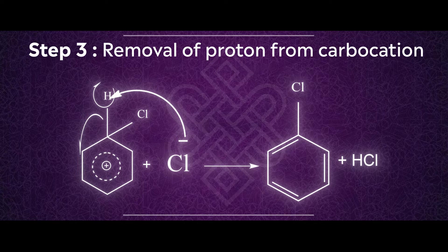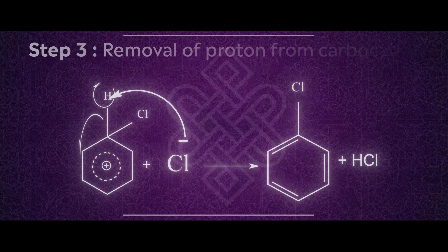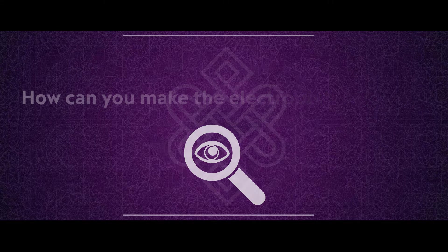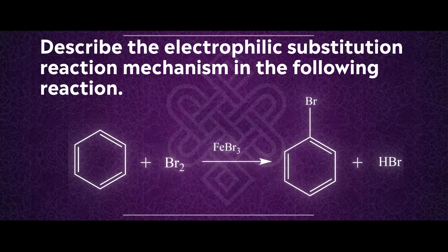Now I'm going to give you a question. Please explore and try to find how you can make the electrophile stronger. For the second question, describe the electrophilic substitution reaction mechanism for the reaction where benzene reacts with bromine in the presence of a Lewis acid to form bromobenzene with release of hydrogen bromide.